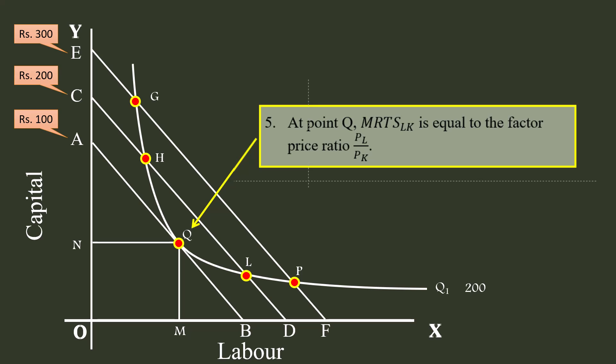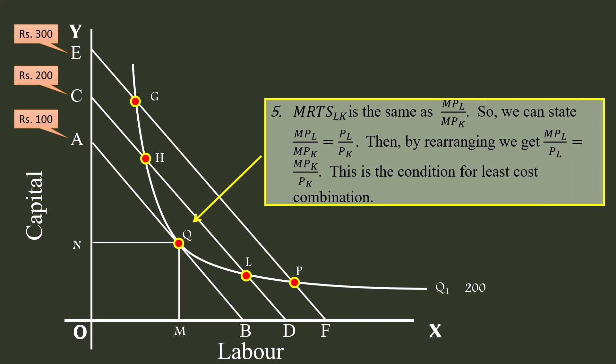Fifth, at point Q, the marginal rate of technical substitution of labor for capital is equal to the factor price ratio PL by PK. Sixth, the marginal rate of technical substitution of labor for capital is the same as the marginal product of labor divided by the marginal product of capital. So we can state: marginal product of labor divided by marginal product of capital equals price of labor divided by price of capital. By rearranging, we get marginal product of labor divided by price of labor equals marginal product of capital divided by price of capital. This is the condition for least cost combination.